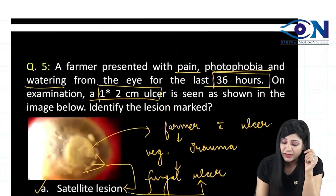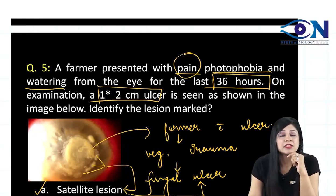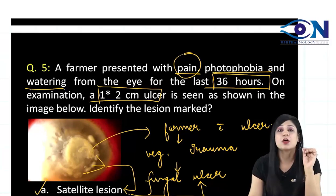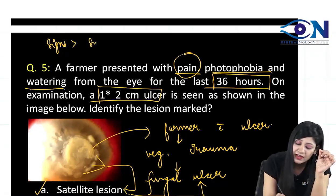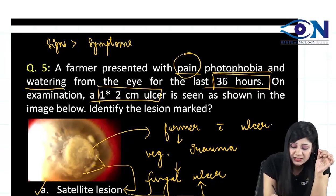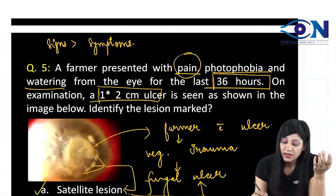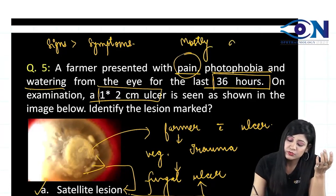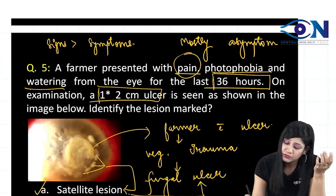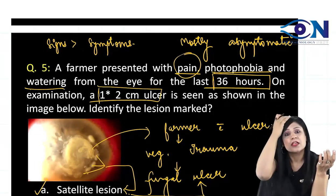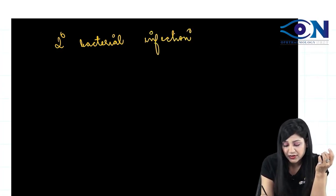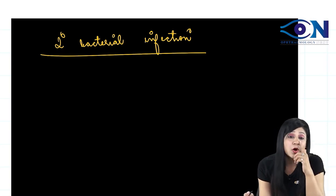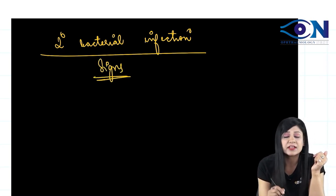Some of you get confused by the fact that we are having pain here — if it is a fungal ulcer, pain should not be there. Always remember that in fungal ulcer, the signs are more than the symptoms. That is correct, but this does not mean we cannot have pain. Mostly it is asymptomatic, but of course we can have secondary bacterial infection, and if the patient is having secondary bacterial infection, in that case we can have pain.